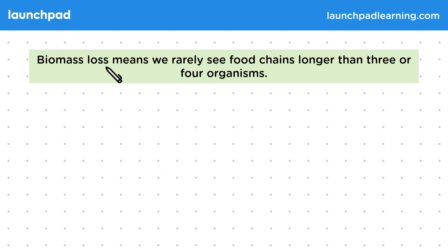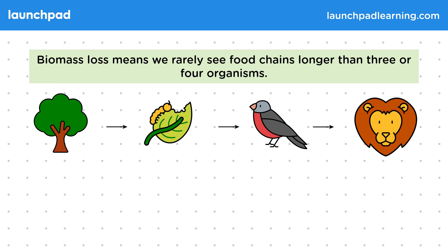Biomass loss means we rarely see food chains longer than 3 or 4 organisms. Only approximately 10% of biomass is passed on.